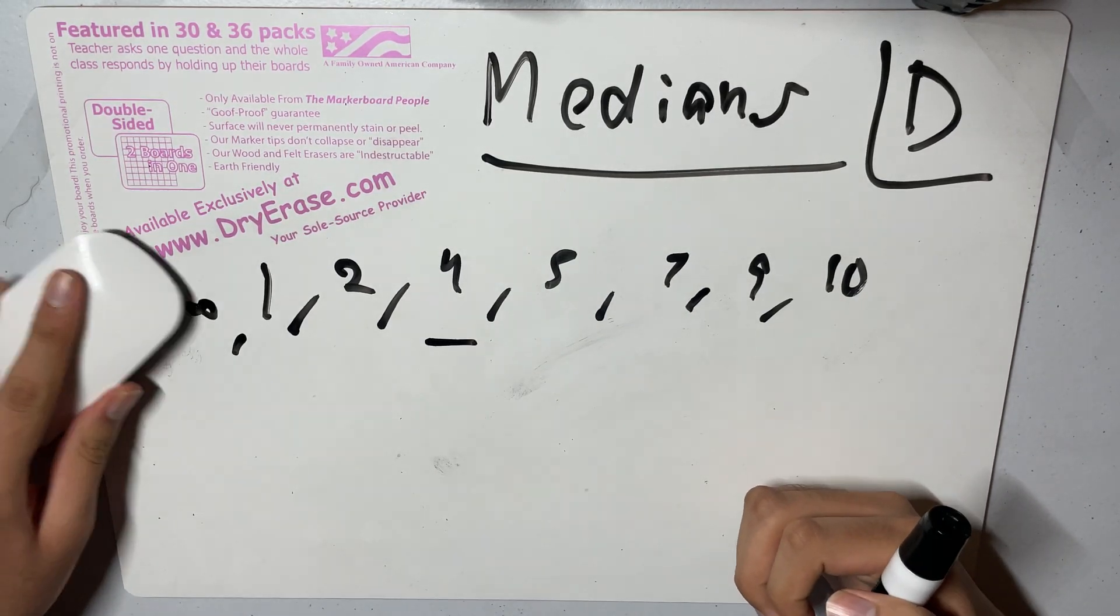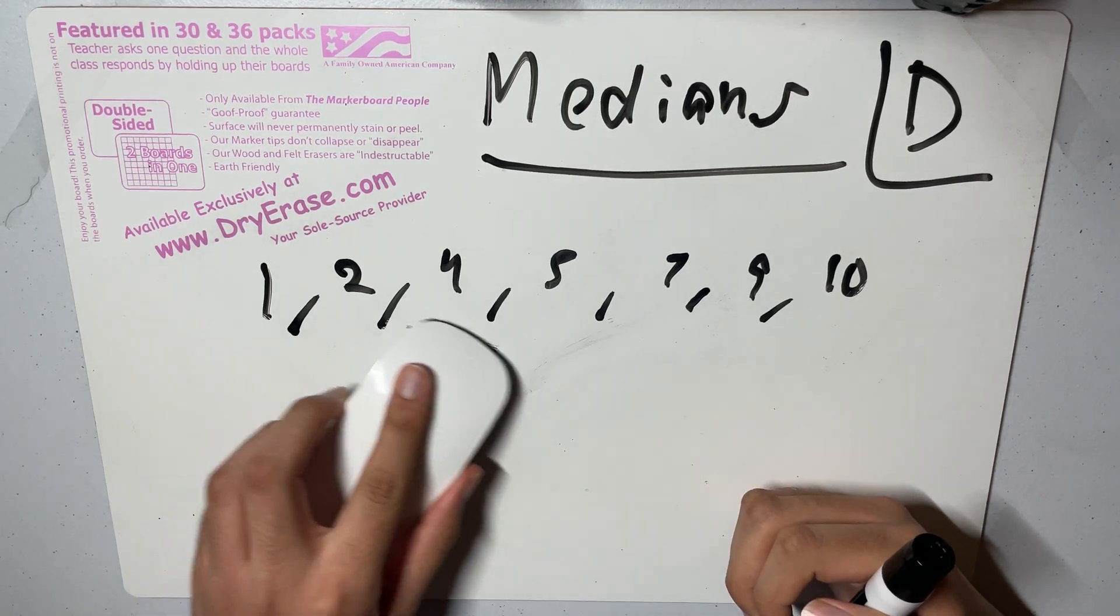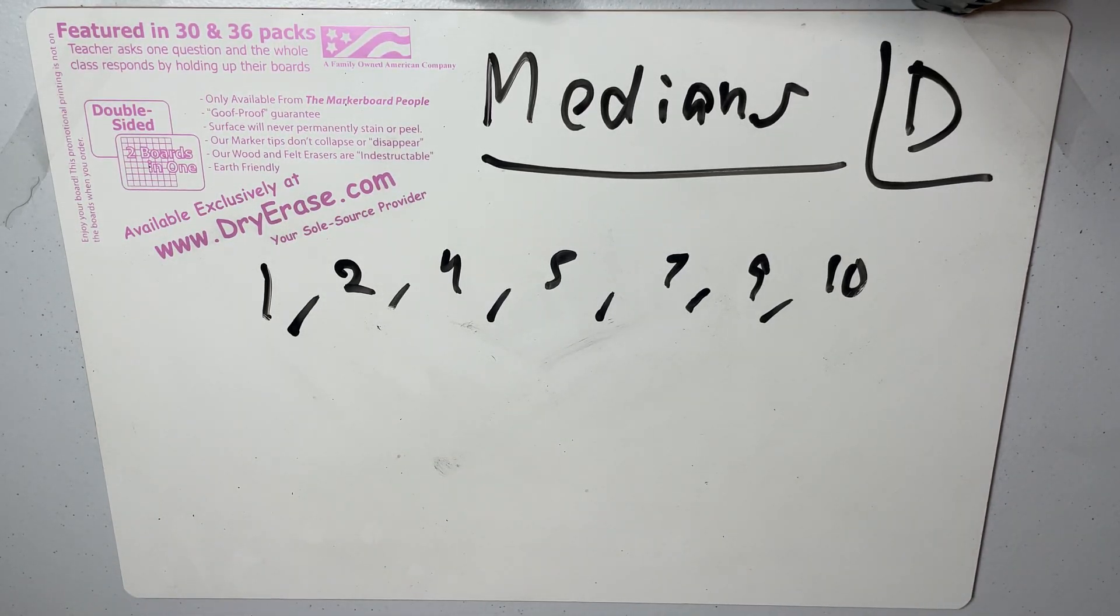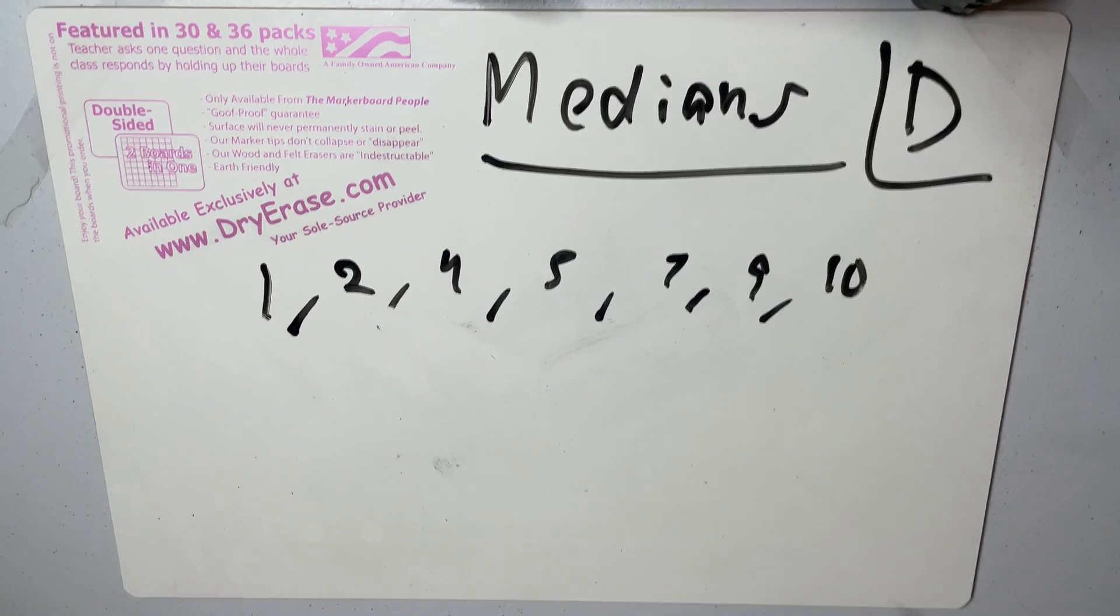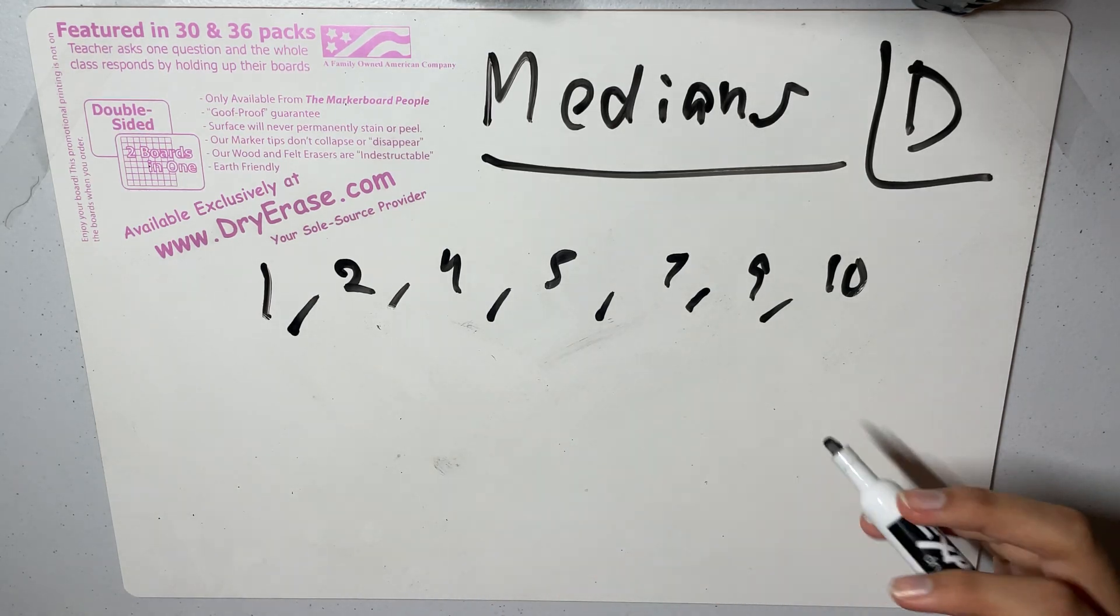So basically, what we have is this property where, when we're adding, each time we're adding two elements, we can only shift the median one to the left or one to the right, at most.